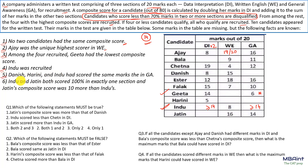The fifth point says Danish, Harini, and Indoo scored the same marks in GA — call that x. Indoo and Jatin scored 100% marks in exactly one section, and Jatin's composite score was 10 more than Indoo's. The only space for Jatin to score 100% is in DI, giving 20 marks there. So Jatin's composite score is 40 plus other marks, equaling 70.